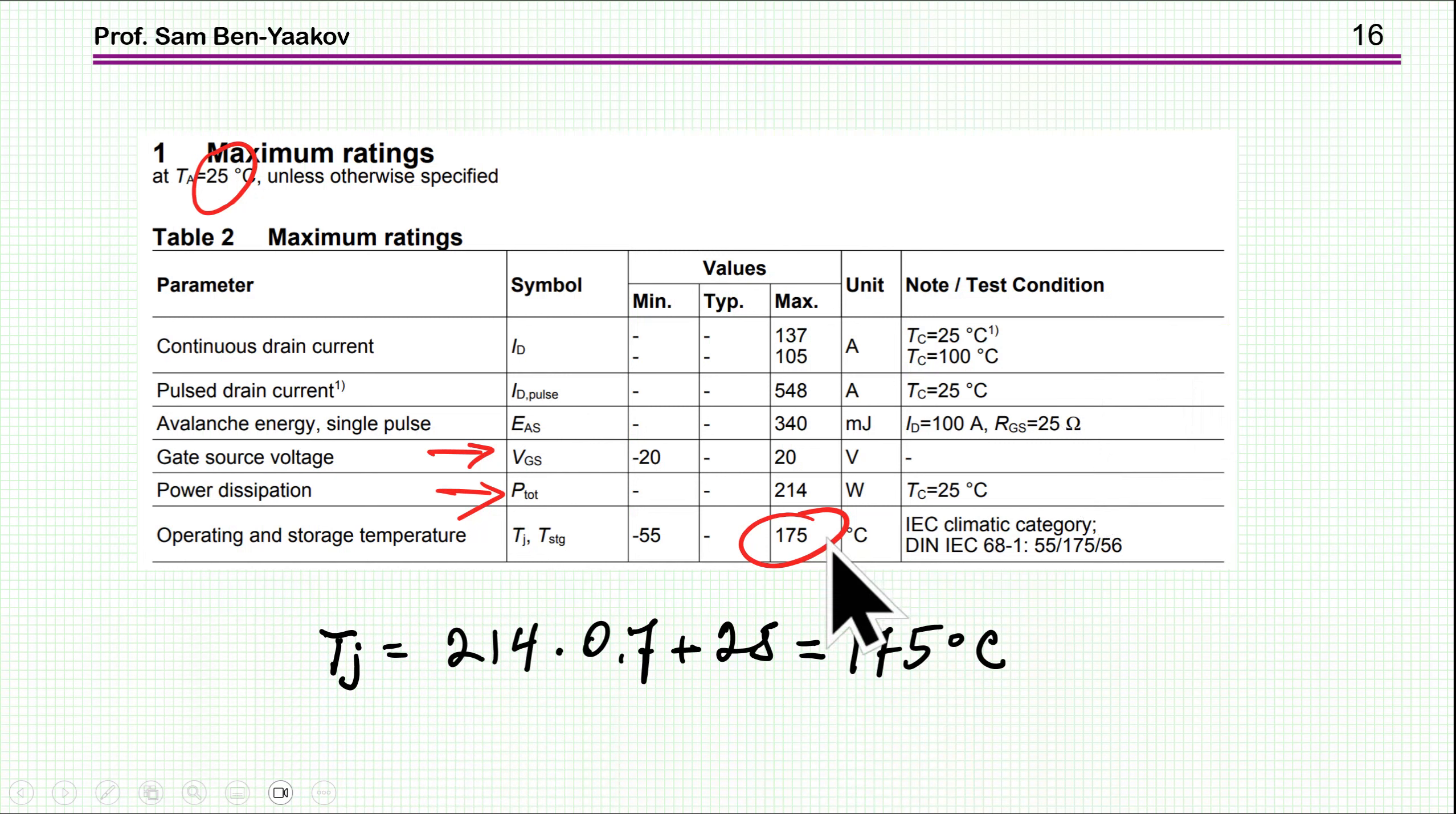Moving to these parameters. The gate voltage cannot exceed minus 2 to plus 20. There's not much to add, although there are questions what will happen if the pulse is higher than that for very short duration. Then there is a limit for the power that the unit can dissipate at 25 degrees centigrade. The limitation is 175 junction temperature. If the power is 214, thermal resistance is 0.7, so junction to case temperature plus the ambient temperature comes to 175, which is again the limitation here.